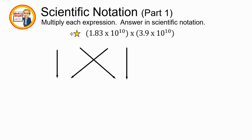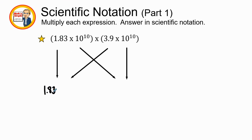And our next, I'm going to keep my bow ties here just to remind me. Next example, we have 1.83 times 10 to the 10th power times 3.9 times 10 to the 10th power. So let's go ahead and get our integers. 1.83 times 3.9. 1.83 times 10 to the 10th power times 10 to the 10th power.